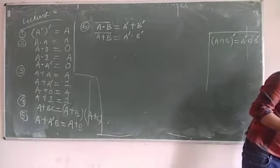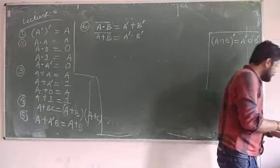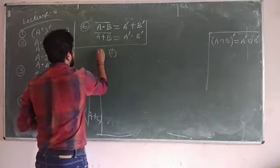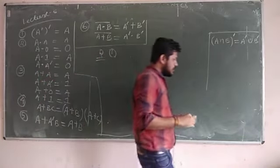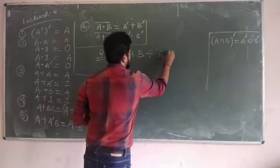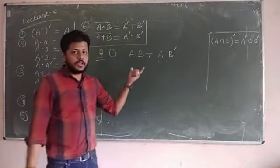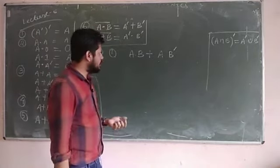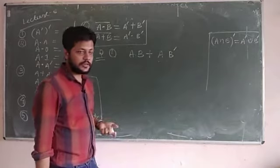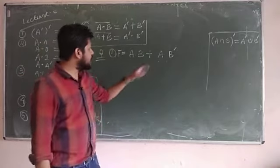Now I am going to solve a few questions to explain how to apply these theorems. Question number 1: the function F is equal to AB OR AB complement. If we directly implement this logic, we need one OR gate, two AND gates, and one NOT gate — four gates total.